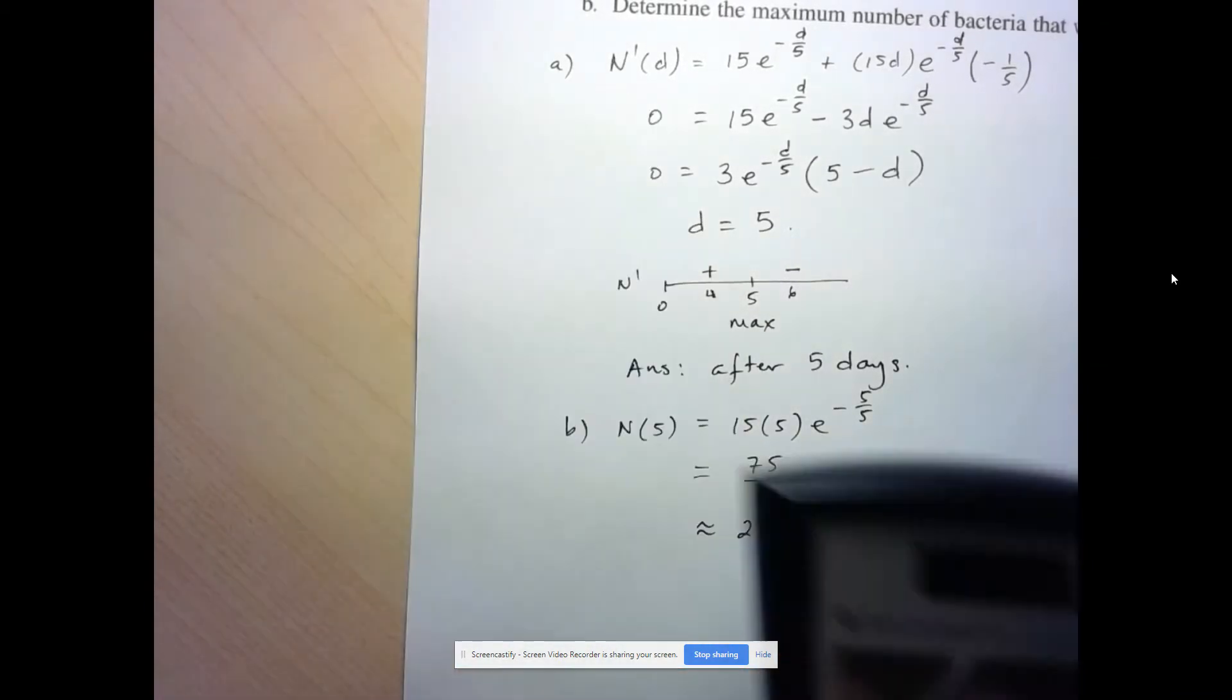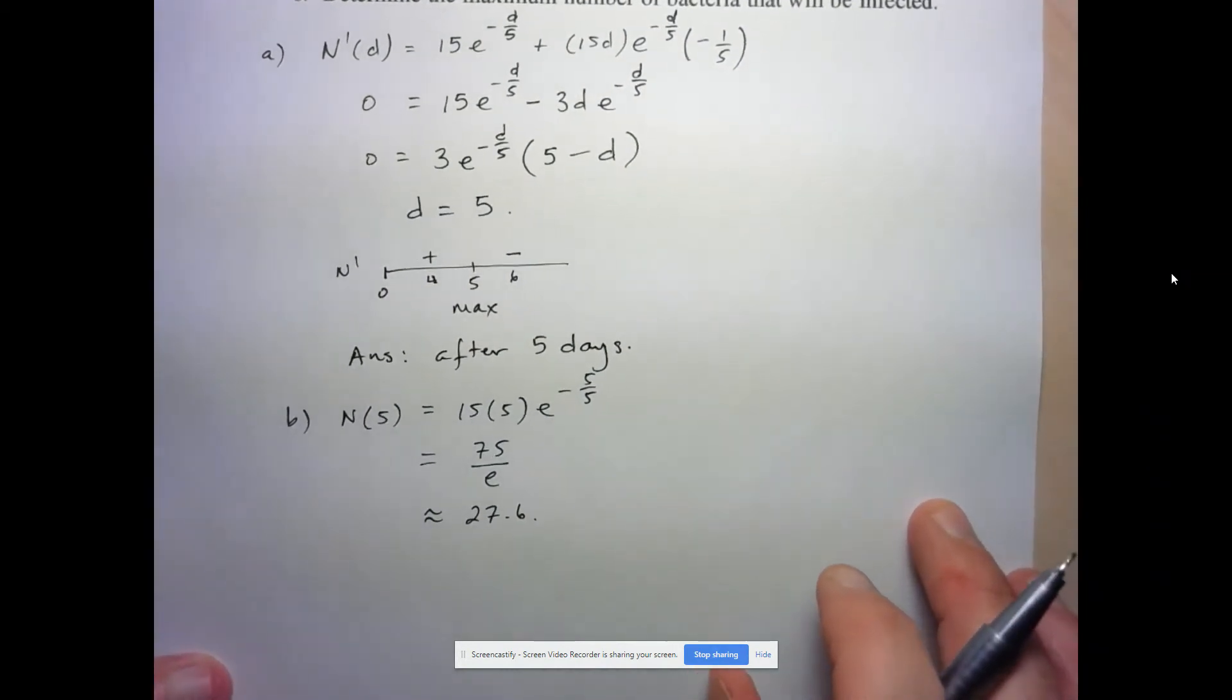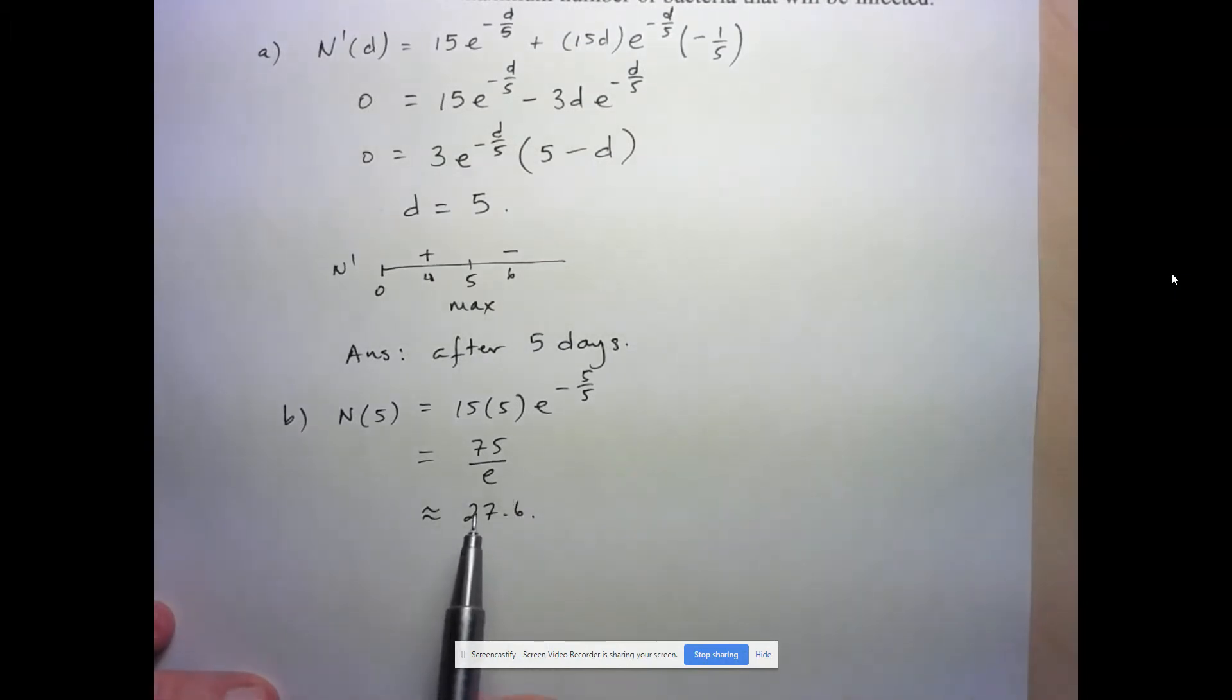But of course, we can't have 27.6 bacteria. So the question is, do we round up or down? Well, I guess this tells us that after 5 days, we don't quite have a full 28 that have been infected. So I'm actually going to round that down, because we know for certain that 27 will have been infected. So 27 is max number of bacteria infected.